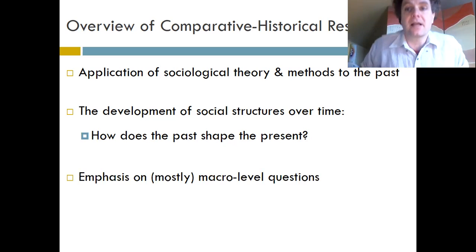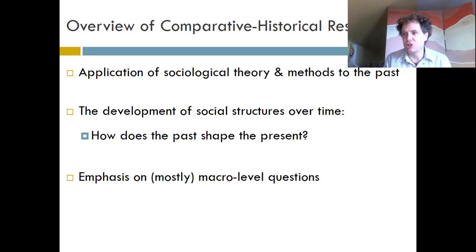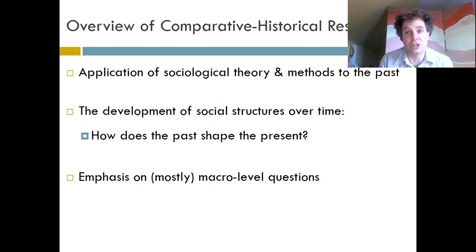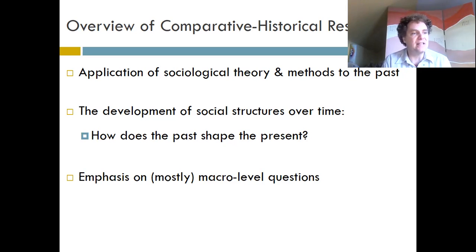Comparative historical research is mostly interested in what are called macro-level questions — big social structures like economy, religion, organizations, and culture. It asks such questions as: why did capitalism happen? How do governments form? Why are some governments democratic and others dictatorships? What causes revolutions? These are the big macro questions of society, focused on explaining social structure — how did the past create the structures that we now live in?